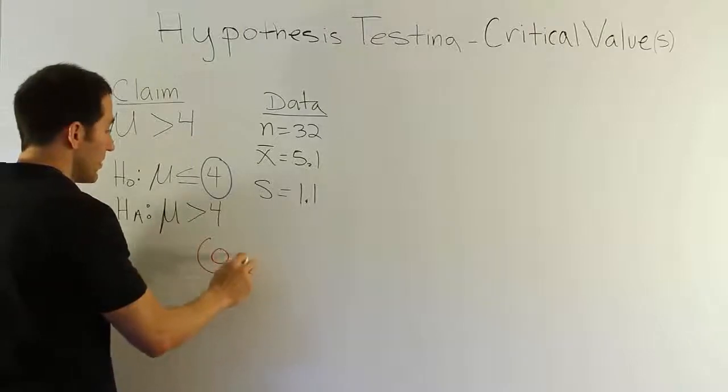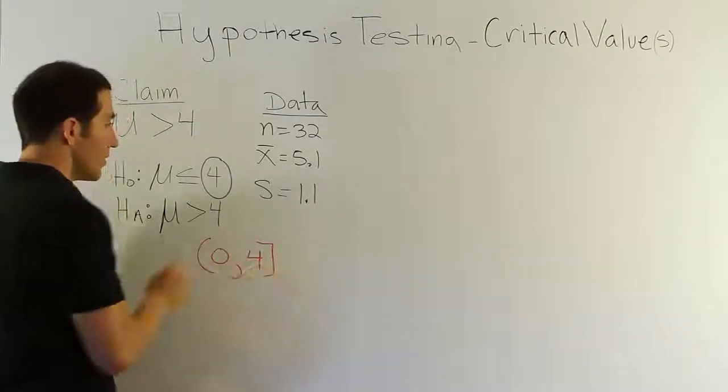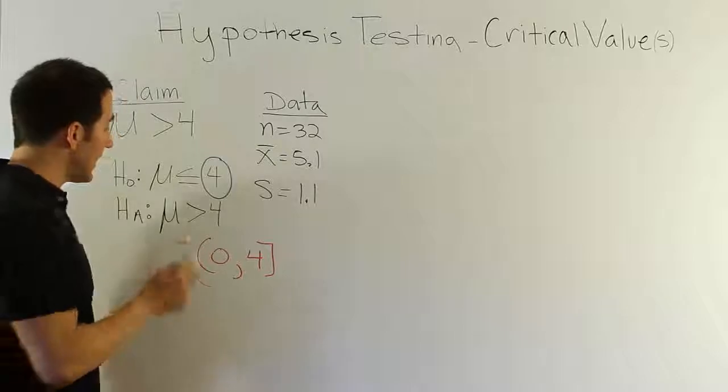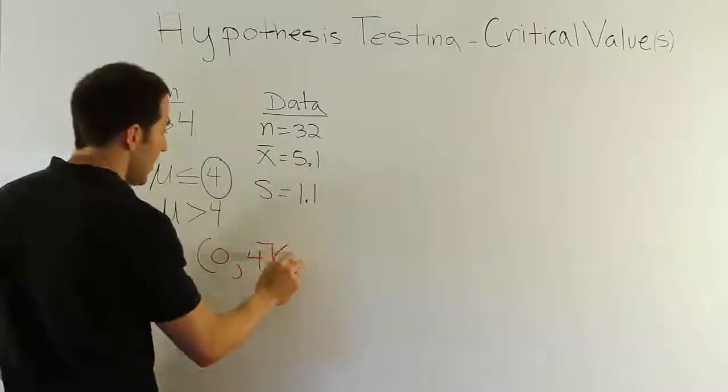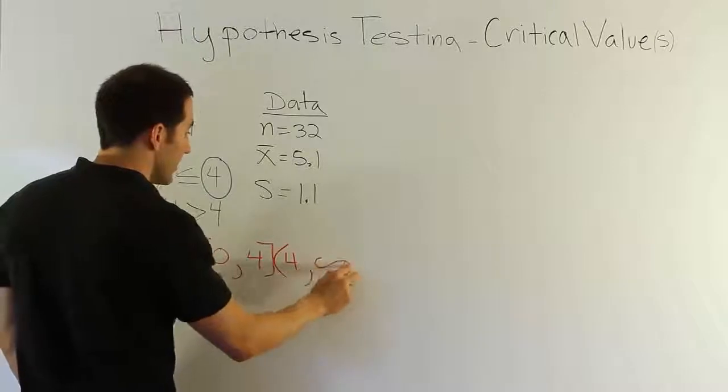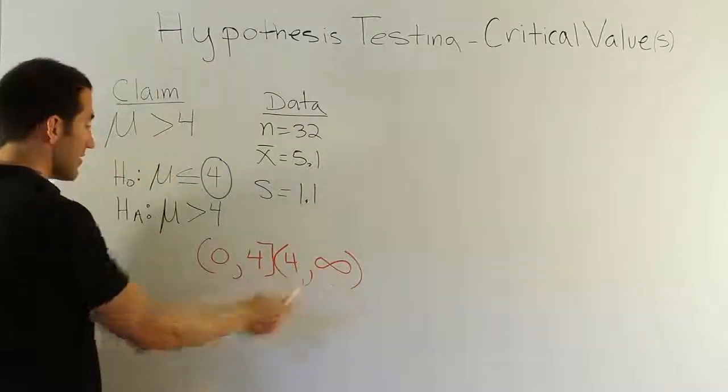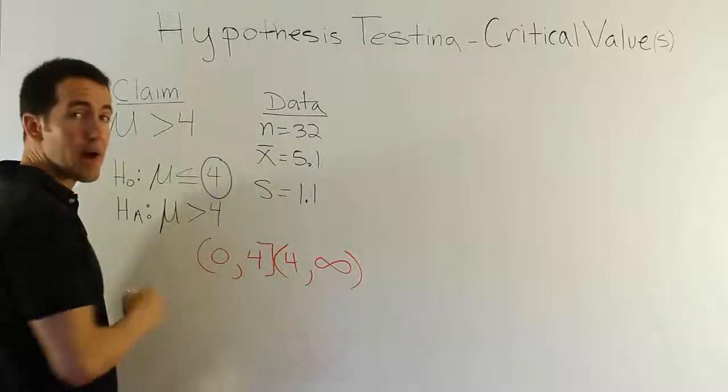If the mean was somewhere between 0 and 4, inclusive, we would say that HO is correct. If the value for the population mean was instead from 4 to infinity, any number in that set, then HA would be the correct hypothesis.